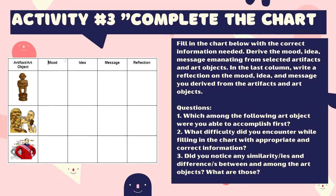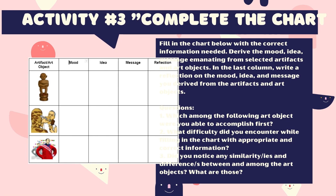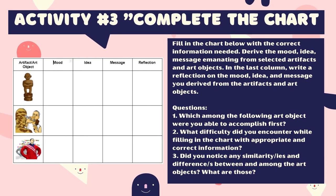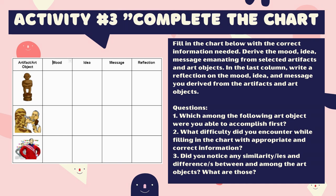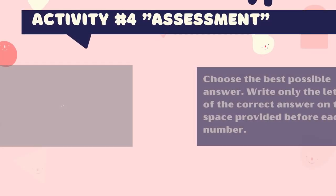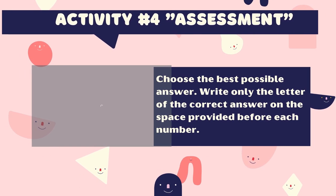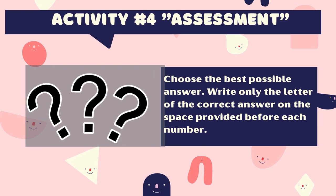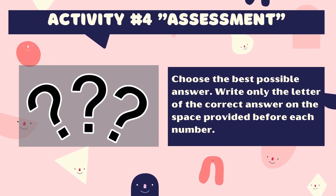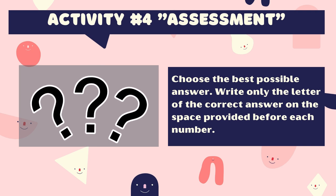For activity number three, fill in the chart below with the correct information needed. Derive the mood, idea, and message emanating from the selected artifacts and art objects. In the last column, write a reflection on the mood, idea, and message you derived from the artifacts and art objects. And for your last activity, the assessment — choose the best possible answer. Write only the letter of the correct answer on the space provided before each number. Reminder: students, complete all your answers in your activity sheet before you click turn in. Thank you and happy learning!